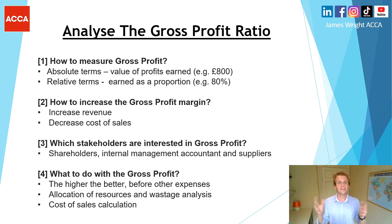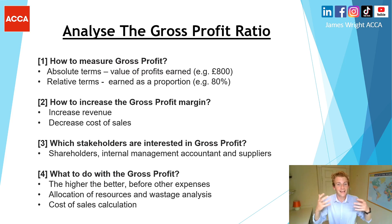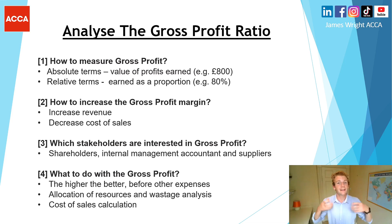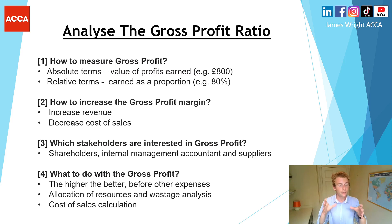You also need to consider which stakeholders are interested in the gross profit margin. The key ones are shareholders, who want it to be as high as possible; internal management accountants, who want to understand which aspects of production are most profitable; and also suppliers, because the cost of sales relates to inventory and purchases. To calculate cost of sales: opening inventory plus purchases, less closing inventory — that gives the cost of sales figure for the period.